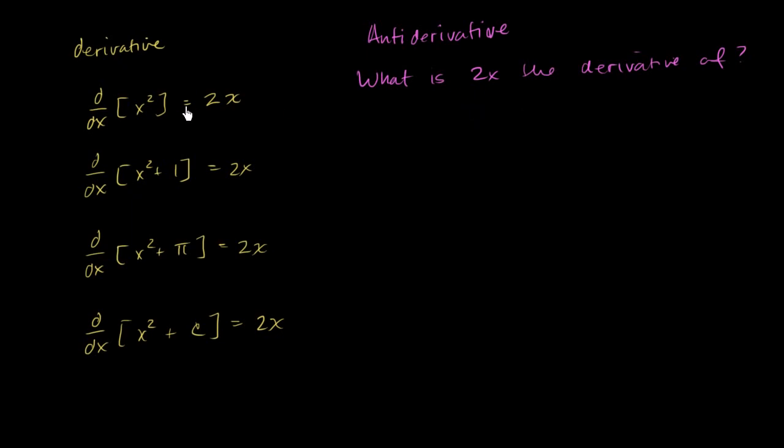And so you could say, well, 2x is the derivative of x squared. But you could also say 2x is the derivative of x squared plus 1. You could also say that 2x is the derivative of x squared plus pi. I think you get the general idea.